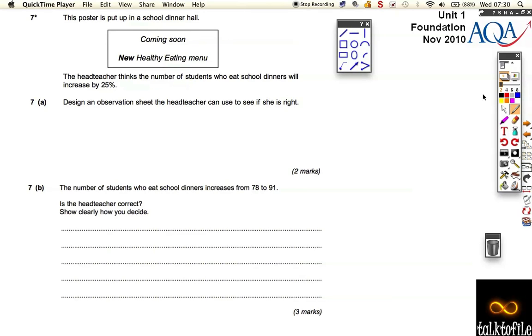Kevin here and we've got a post that's been put up in school hall about some healthy eating. So there's a new menu, the menu of the school dinners is changing and the headteacher thinks that the number of people is going to increase. And then it says design an observation sheet the headteacher can use to see if she's right.